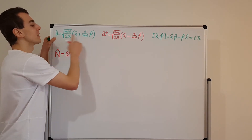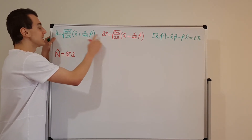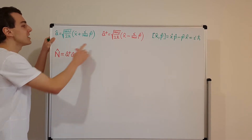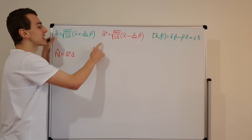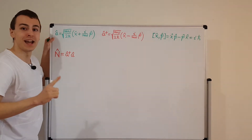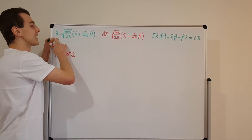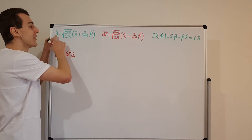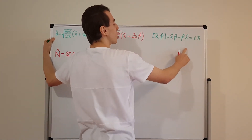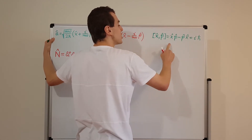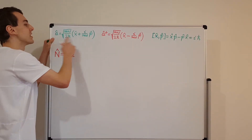These guys do not commute with each other, so they're not equal to each other, which means this is not a Hermitian operator. In fact, when you take the commutator of â and â† you just get one. There's another video where I prove that commutation relation. This commutation relation plays a similar role to the canonical commutation relation, and we're going to use both of these a lot.